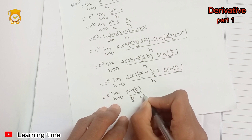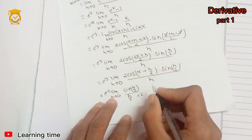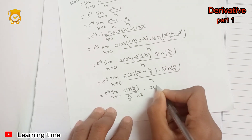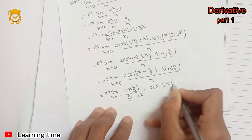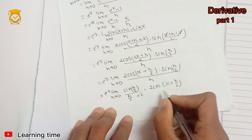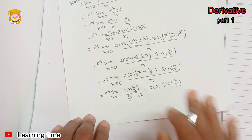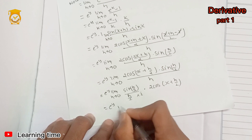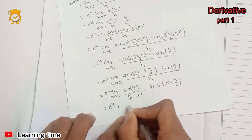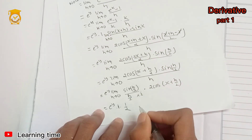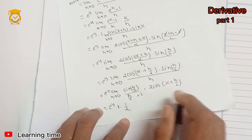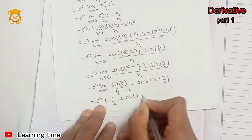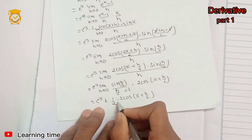Okay, time for the second question. Putting it together: 2 cos(x plus x/2) — so the final answer is 2 cos x.